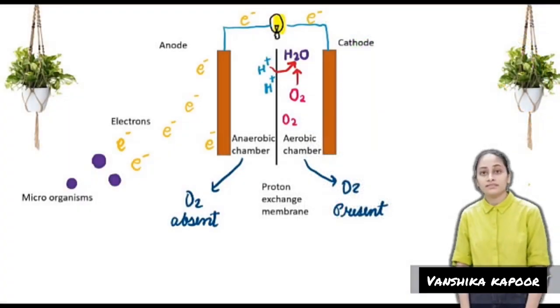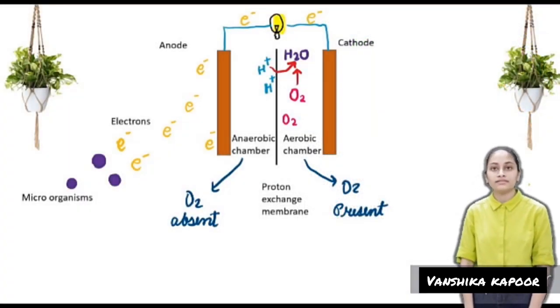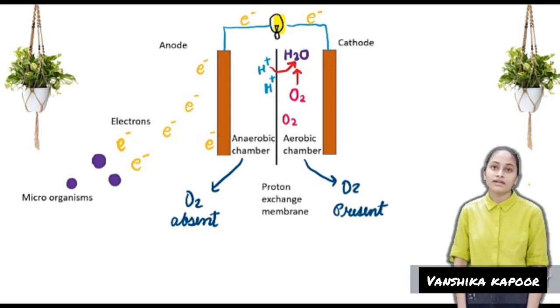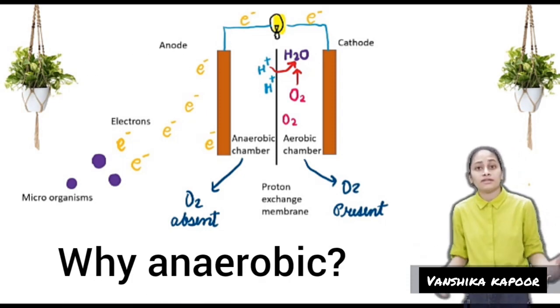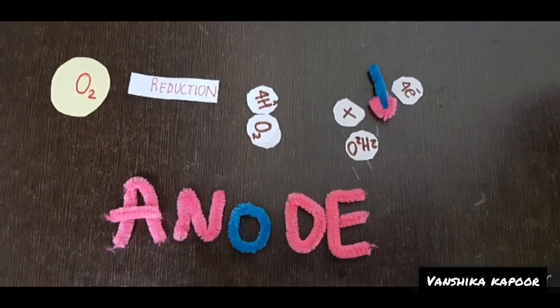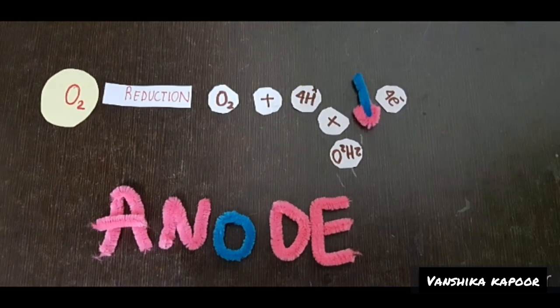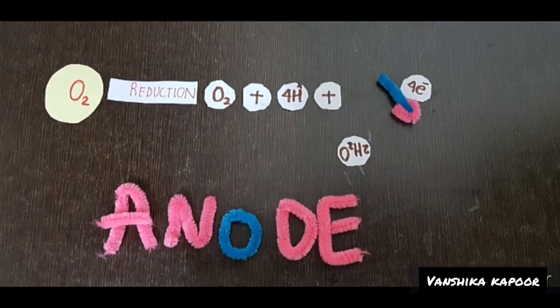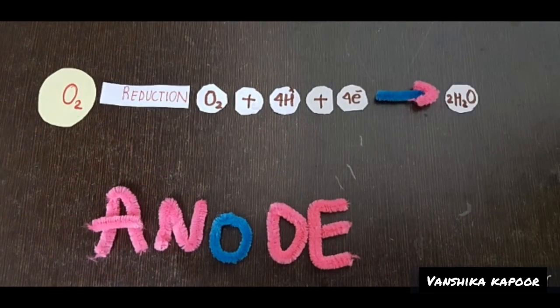These microorganisms deliver the electrons to a solid surface like a graphite electrode under anaerobic conditions. But why anaerobic? If O2 would be present at the anode, electrons would directly be used for oxygen reduction and would be lost for electricity production.